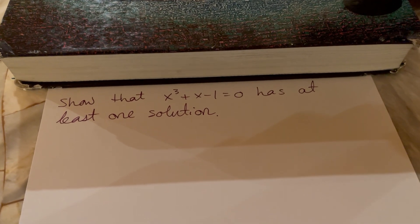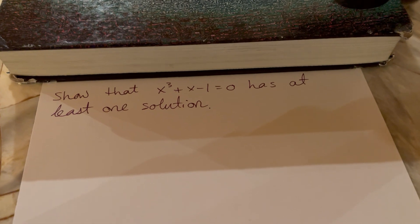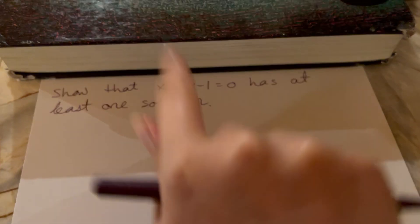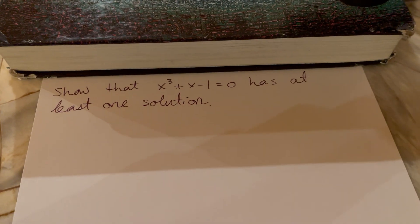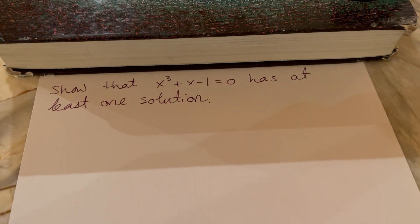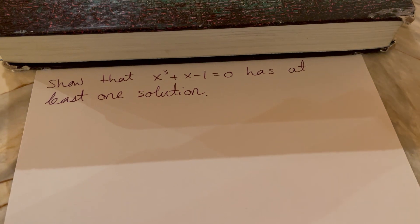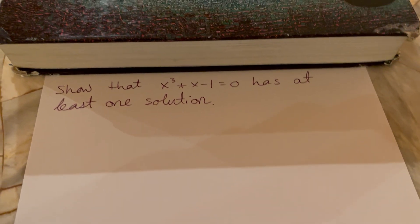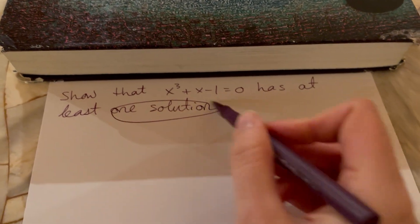Welcome back my fellow calculus adventurers. So here we have a problem today: show that x cubed plus x minus one equals zero has at least one solution. They don't tell you how to do it, they just say show it has at least one solution.